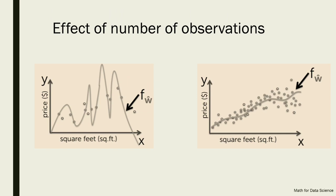An important factor is that overfitting also depends on the number of observations. In a graph with very few data points, fitting all of them makes the model very complex. In contrast, with a large number of data points it is not easy to overfit — doing so would require a super complex model that may not even be computationally feasible. So, the fewer the data points, the higher the chances of overfitting.